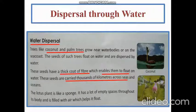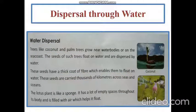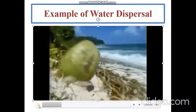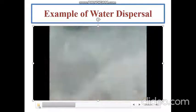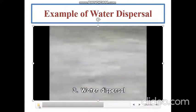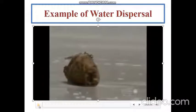Another example is the lotus plant, which is like a sponge — it has lots of empty spaces filled with air throughout its body, making it very light and helping it to float. Now through a video, you can see a coconut falling from the tree and getting washed away with the waves of the ocean. By this way, it floats and crosses thousands of miles to reach another sea coast.